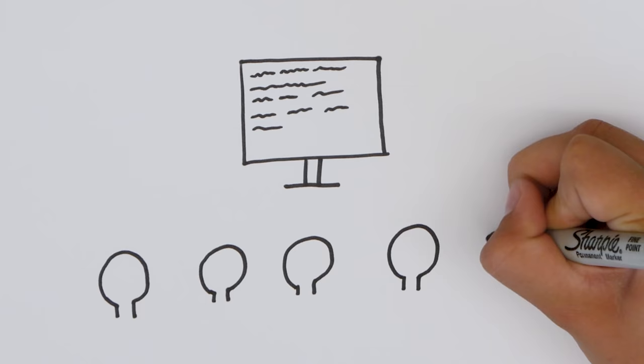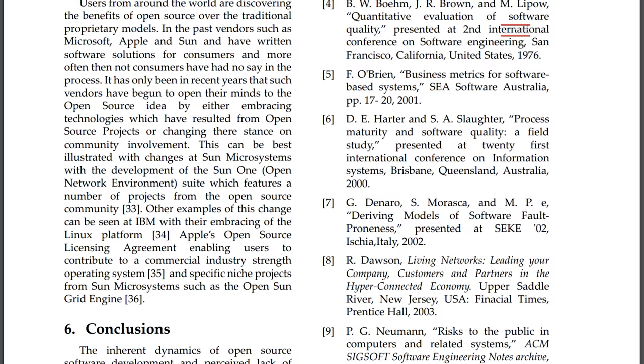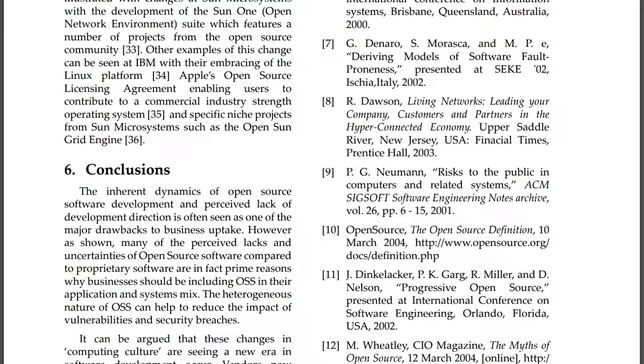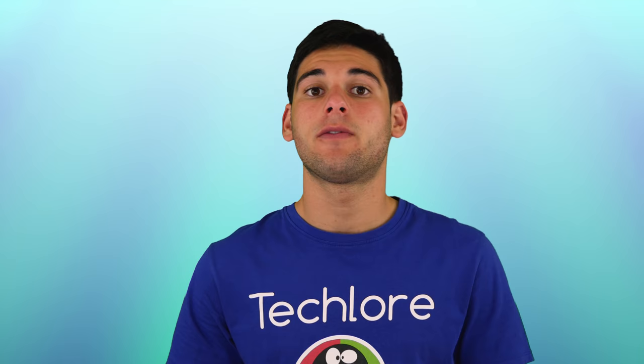Now you might be asking: if it's public, won't it be easier for hackers to exploit it? This is far from the truth. Since the code is public, more and more people are able to collaborate to fix any possible exploits to make the software as secure as possible. This has proved to be very accurate when looking at statistics between FOSS and proprietary software.